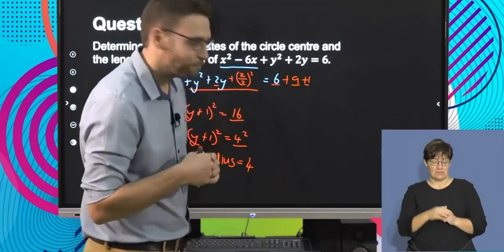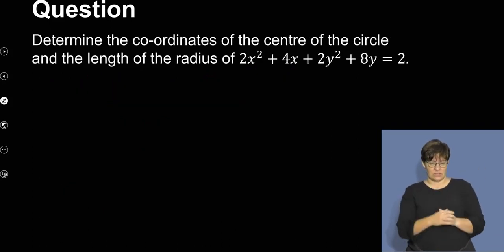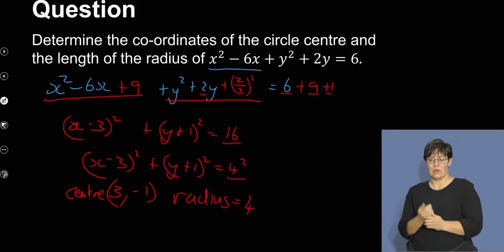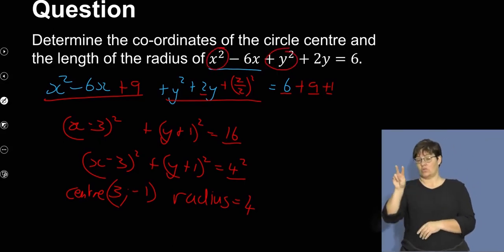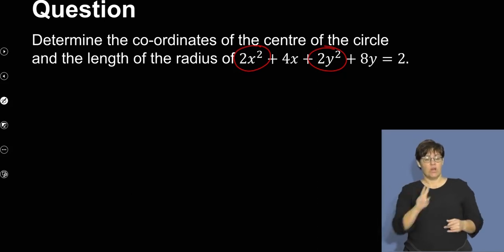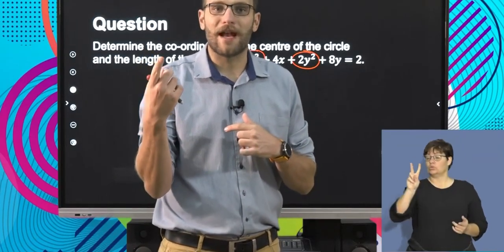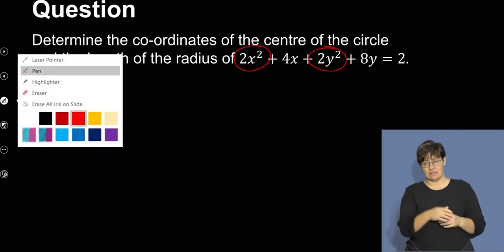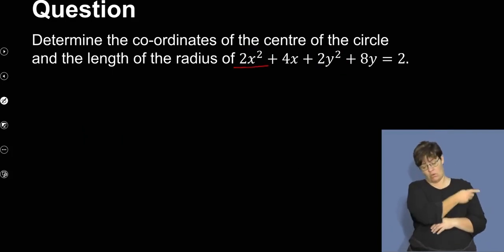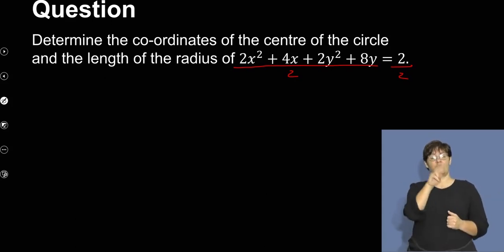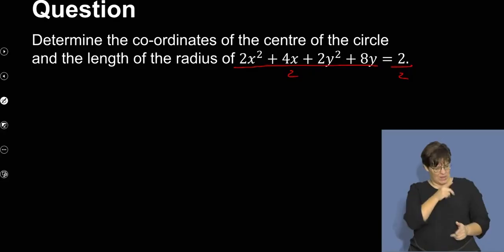Let's move on to the next question: determine the coordinates of the center and the length of the radius. The previous question had x squared and y squared, but now we have 2x squared and 2y squared. I can't have 2x squared and complete the square nicely, so I want it to be just x squared. What we can do is divide the whole equation — left and right — by 2.